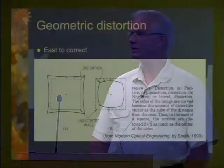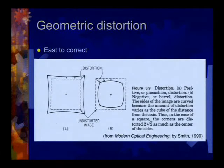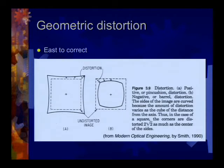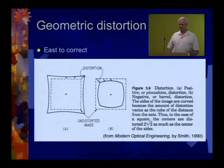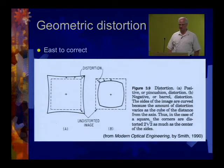Barrel distortion is when straight lines don't map to straight lines — the distortion is rounded. Pincushion distortion is the opposite. We apply a nonlinear pincushion correction to counteract barrel distortion. It doesn't really affect resolution much — it affects pixel sampling density slightly at particular places but that's pretty much infinitesimal.